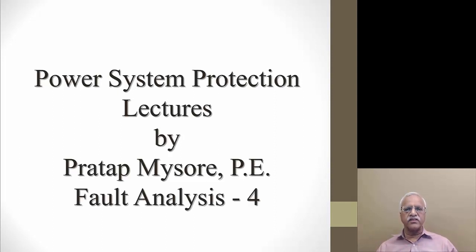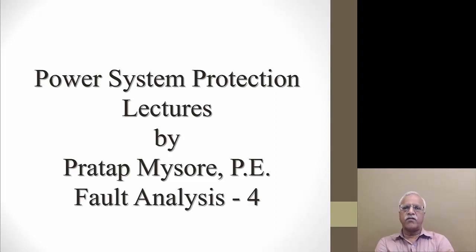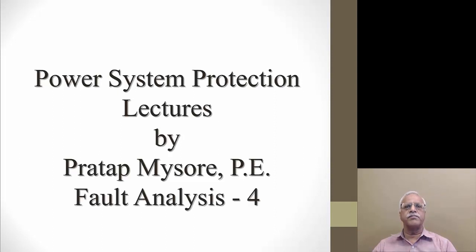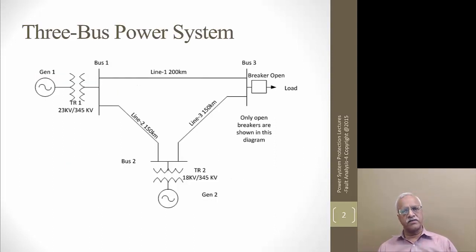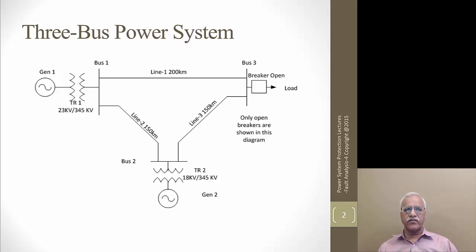In actual conditions, we don't do this manually. We simulate or model everything in a short circuit program, which takes care of calculating and providing us with the short circuit values, voltages, and currents at different locations. This is just to give you a concept. We'll go through a simple three-bus system which has two generators: one generating at 23 kV, the second at 18 kV, stepped up to 345 kV to transfer power from the generating side to the load side.